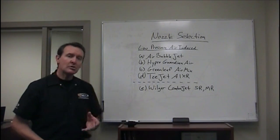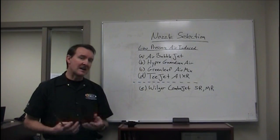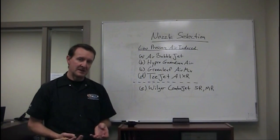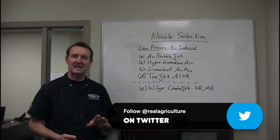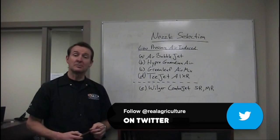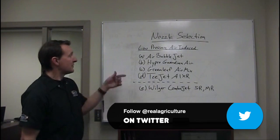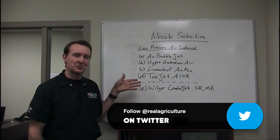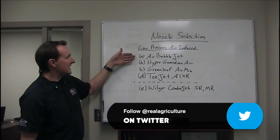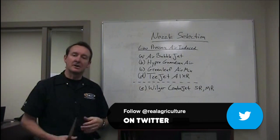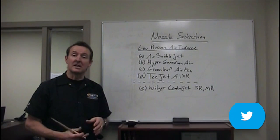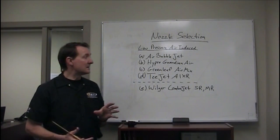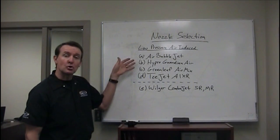The typical go-to nozzle that compromises coverage and drift control well is the low-pressure air induction tip, and there's about four or five different ones. In chronological order which they appeared on the market, we have the Air Bubble Jet as the first one. Commonly used nozzle in Western Canada, produces a nice looking spray pattern between about 30 and 100 PSI and is about medium to coarse in spray quality.